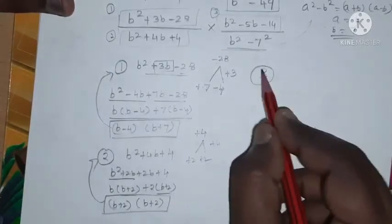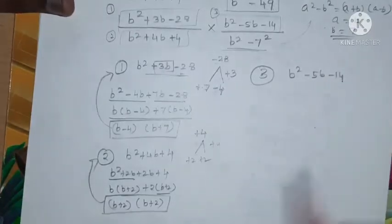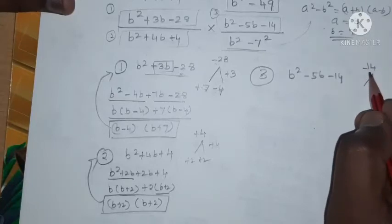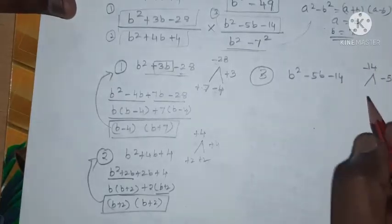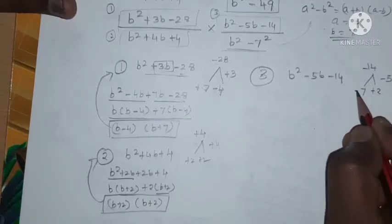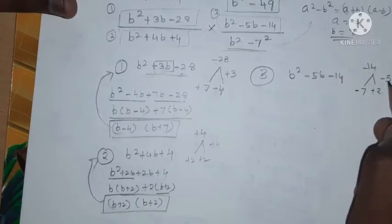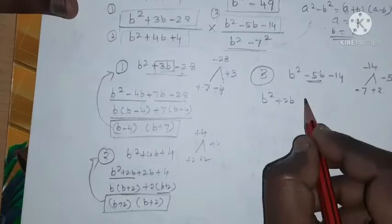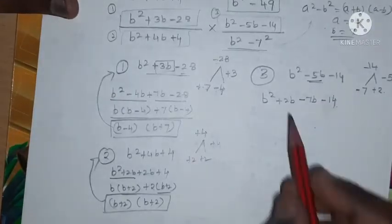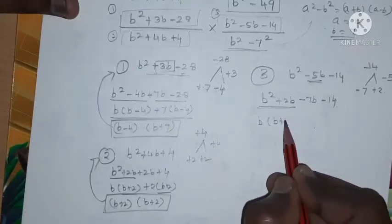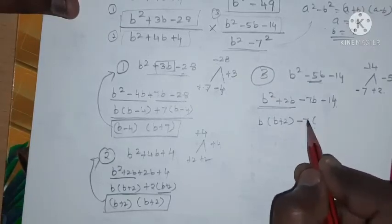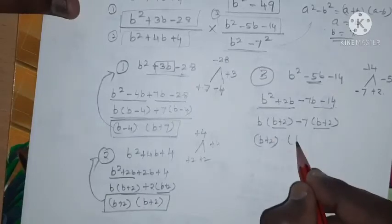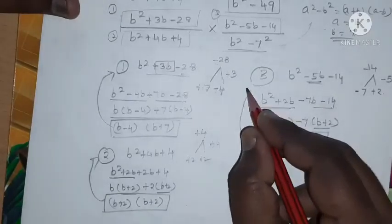Factorizing polynomial 3: b squared minus 5b minus 14. We need two numbers that multiply to minus 14 and add to minus 5. Those are minus 7 and plus 2, since minus 7 times 2 is minus 14 and minus 7 plus 2 is minus 5. Splitting: b squared plus 2b minus 7b minus 14. Taking b common gives b plus 2, and taking minus 7 common gives b plus 2. So the factors are b plus 2 times b minus 7.